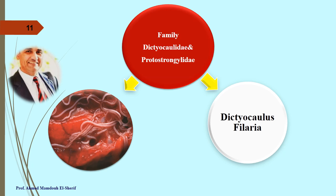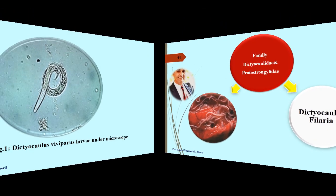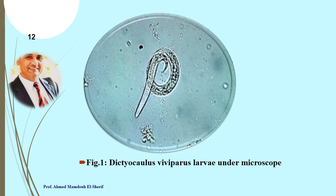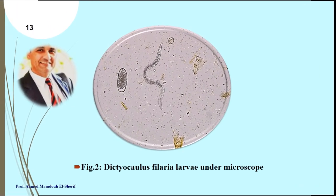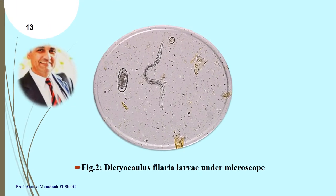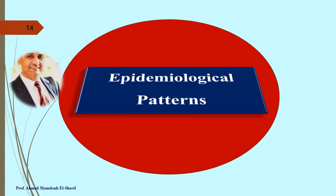This is the shape of an adult worm inside the tissue of the lung. This is the shape of Dictocaulus viviparus larvae under the microscope. This is a picture of Dictocaulus filaria under the microscope with a Paramphistomum egg.